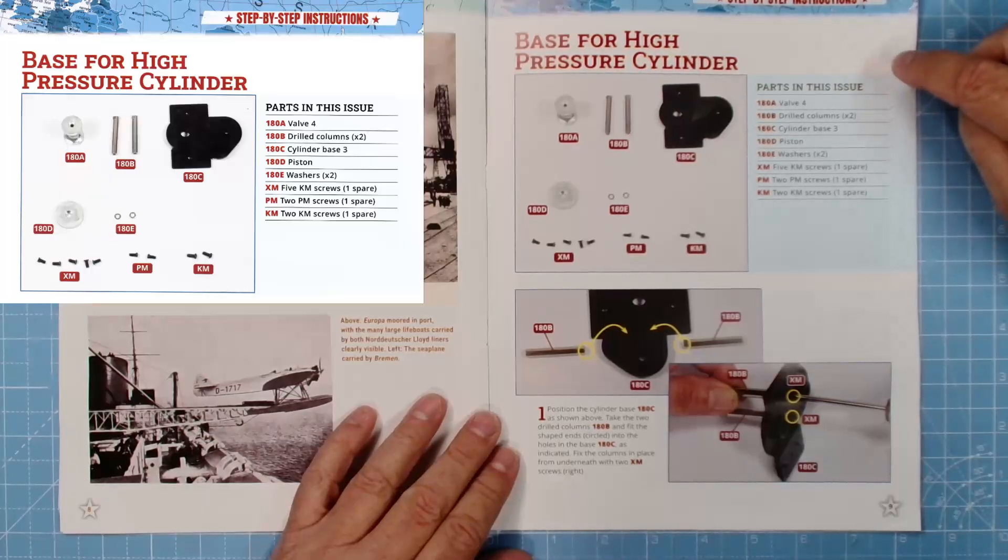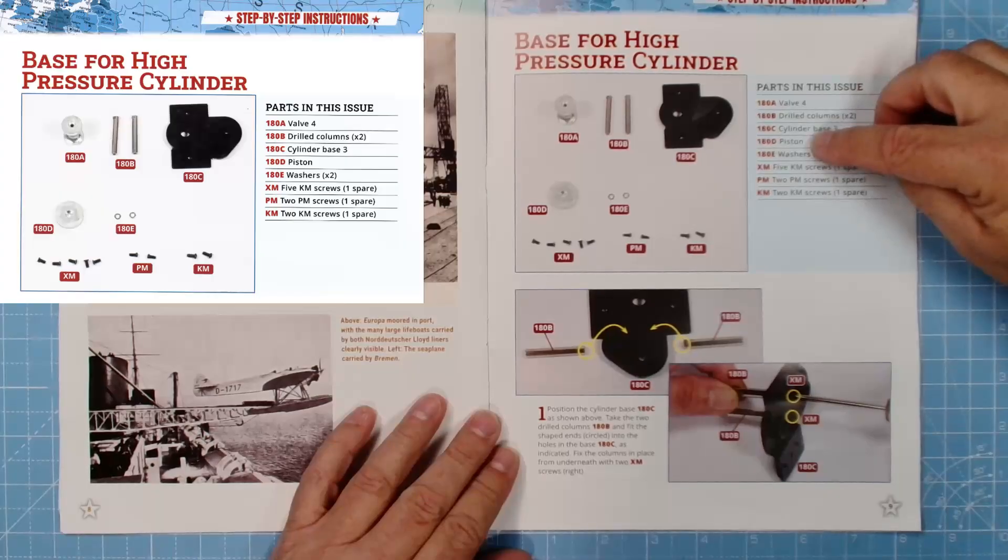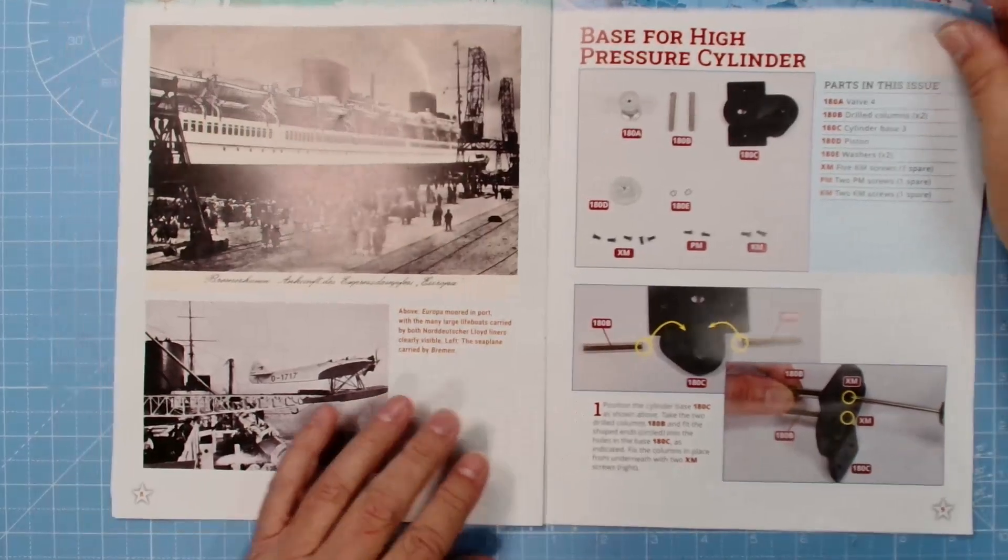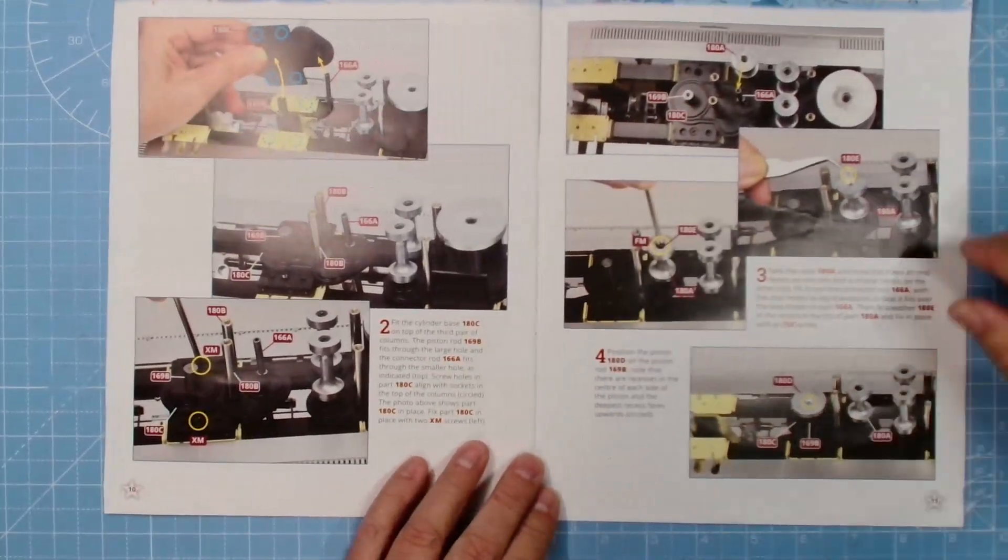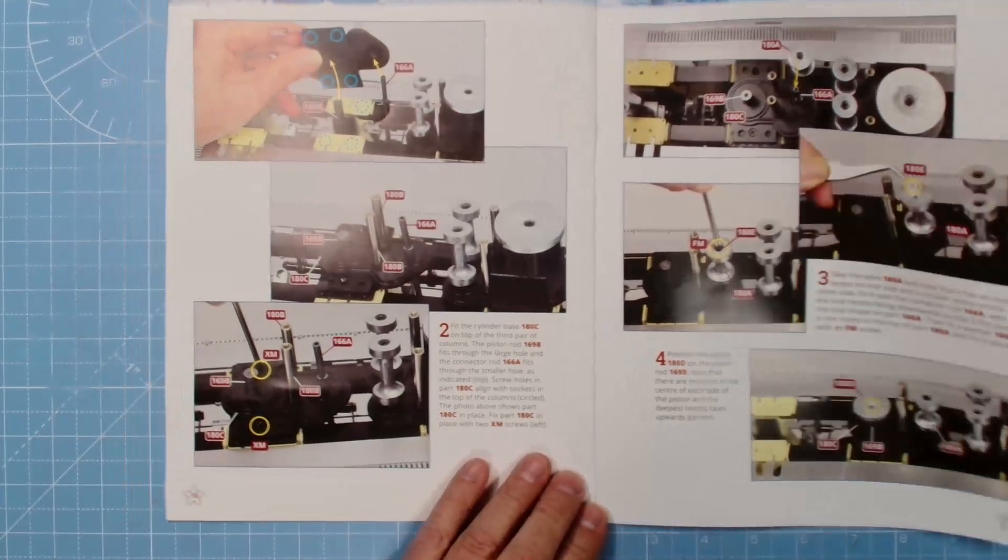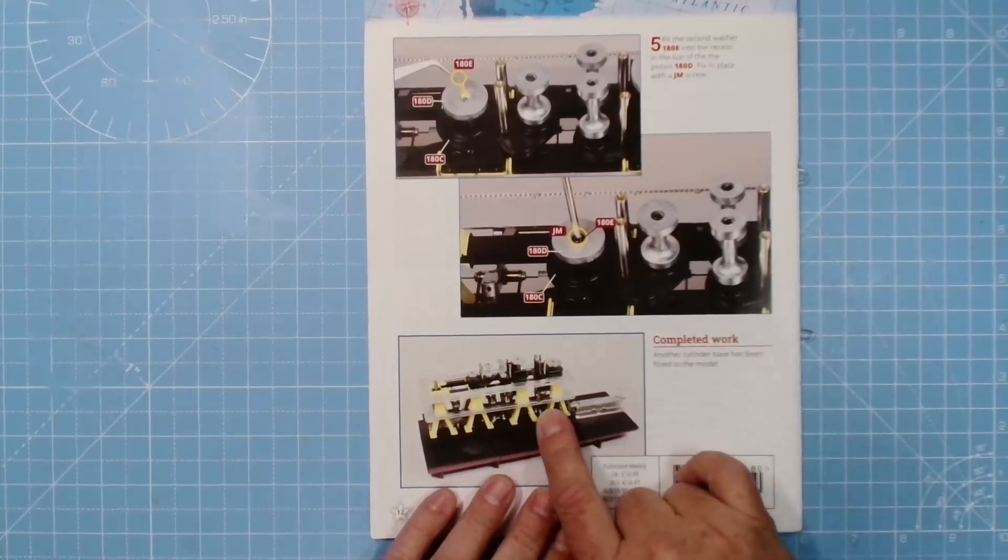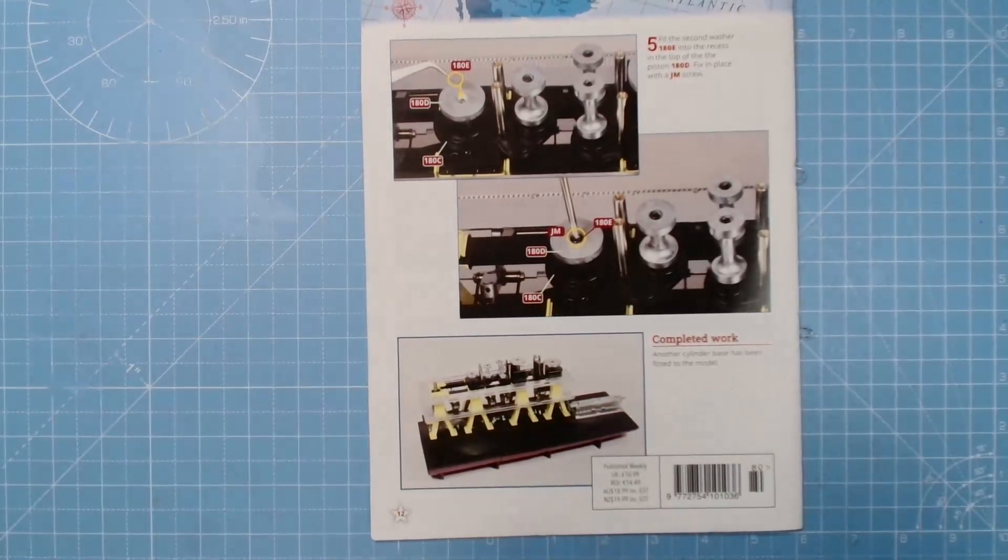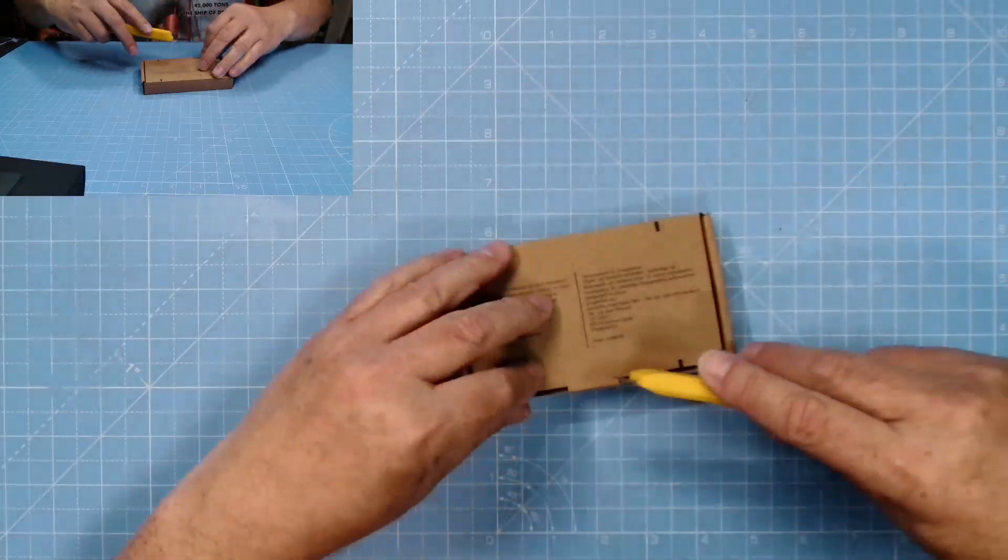In the parts we have the base for a high pressure cylinder: valve 180A, valve 180B, drill columns times two, 180C cylinder base, 180C piston, 180C washer type two, XM, FM, JM screws. Similar to what we've already done, but it's a matter of getting these parts into place. Another cylinder base has been fitted to the model. Let's get on with the build.